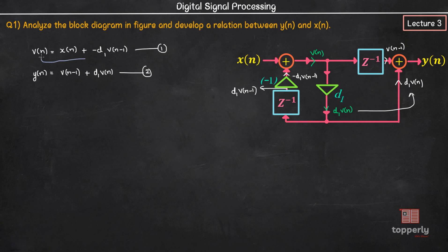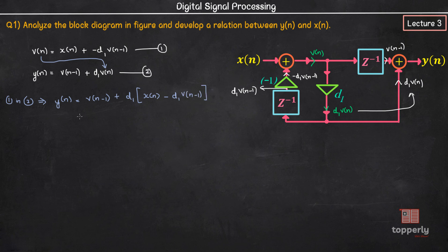Now substituting equation 1 into equation 2 gives us: y of n = v of n-1 + d1 times (x of n minus d1 times v of n-1), which equals d1 times x of n + (1 minus d1 squared) times v of n-1. Let us name it as equation number 3.